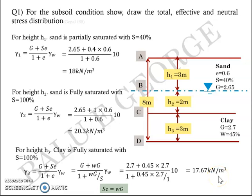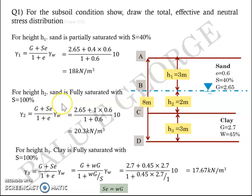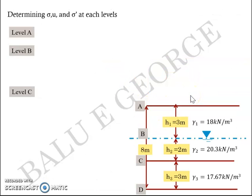You need to work this out on your own and verify the values, as they may differ slightly depending on whether you use 10 or 9.8 for the unit weight of water. Now, having determined the gamma values and heights H1, H2, H3, we will work out the total, effective, and neutral stresses.